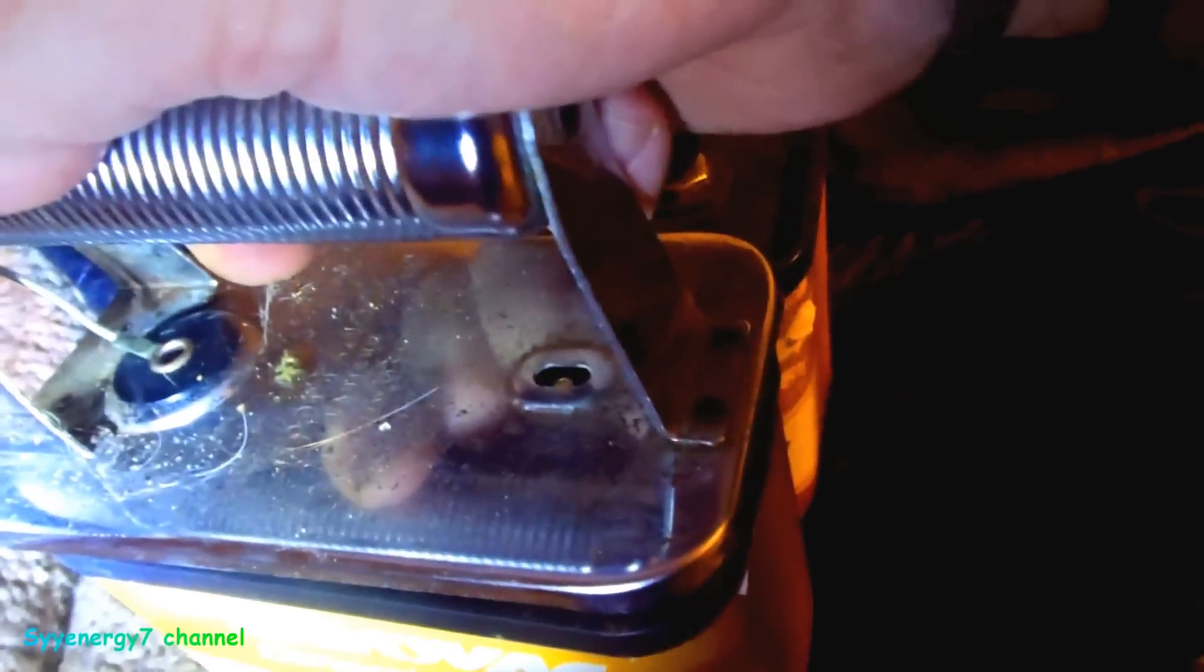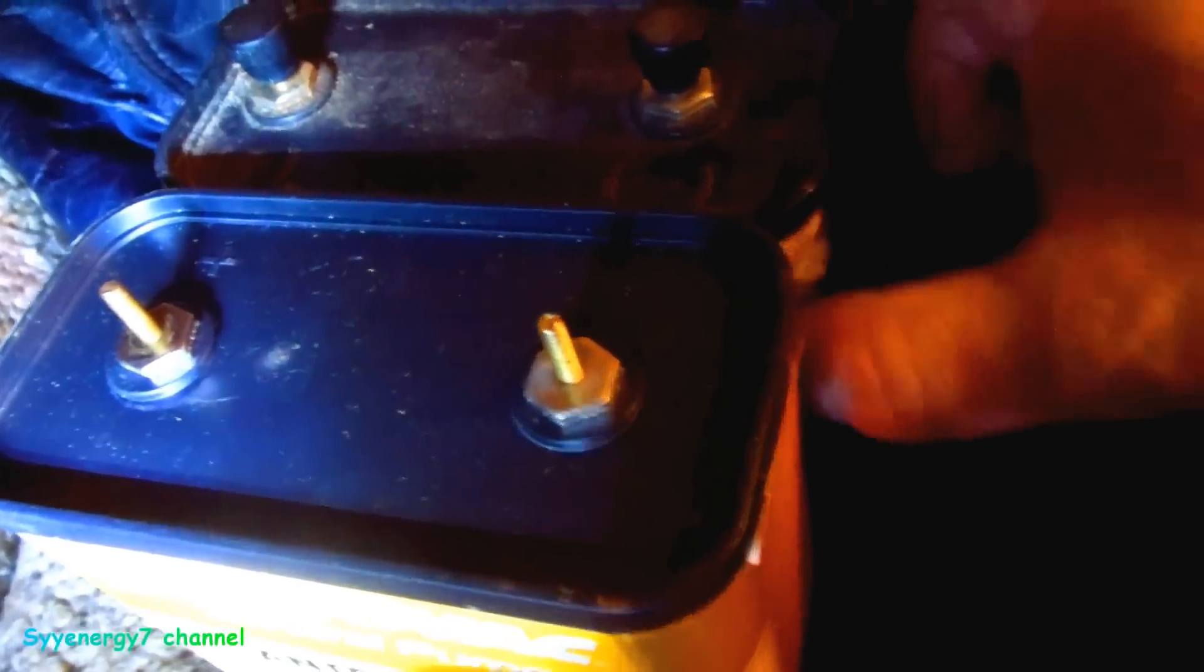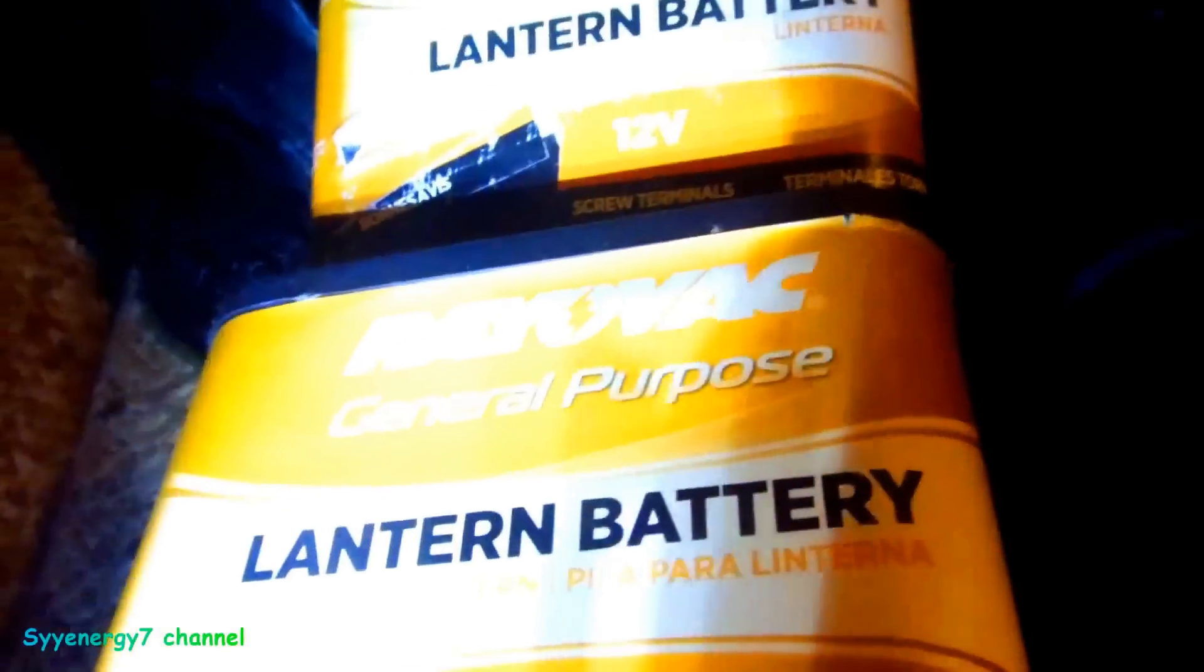They got it set up you probably don't even notice because this is so old-school that these posts are actually closer together on a six-volt battery than they are on a twelve-volt battery. This is designed for six volts. It won't fit with the twelve-volt. They deliberately do that. People probably don't remember that because this stuff is from like fifty years ago at least.